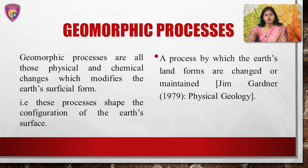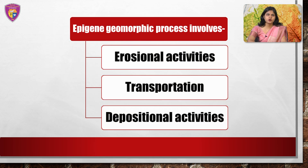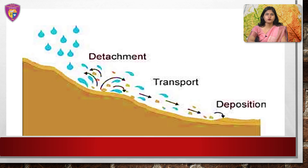Thus, it is a process responsible for the formation and alteration of the earth's surface by physical and chemical interactions between the earth's surface and the natural forces acting upon it. It could be a hypogene or epigene process, where the epigene geomorphic process is responsible for removal of rock material from higher areas and depositing them in lower areas. External or epigene geomorphic processes involve erosional activities, transportation and depositional activities. One of the most important processes that continuously shape the earth's surface and generate sediments that circulate in the rock cycle is weathering.